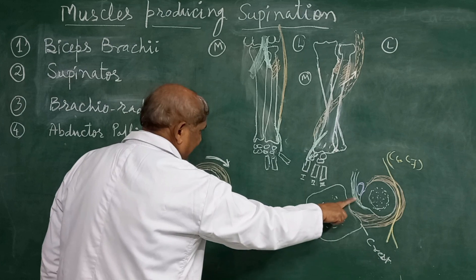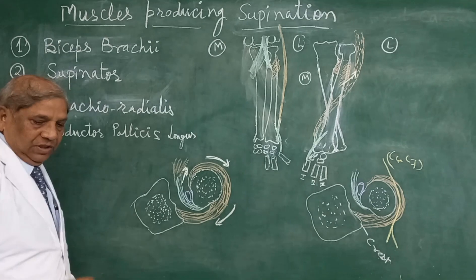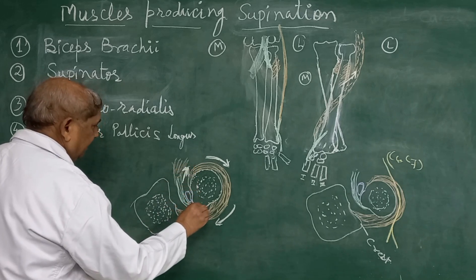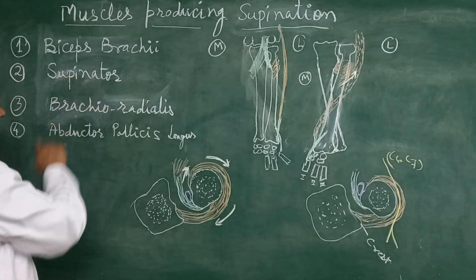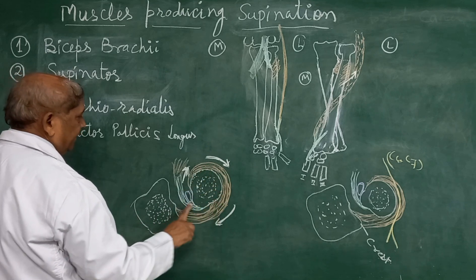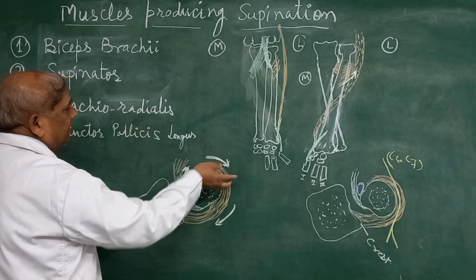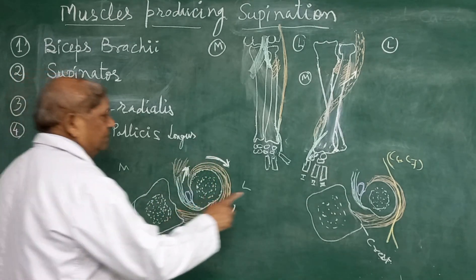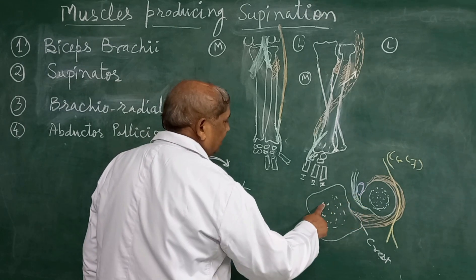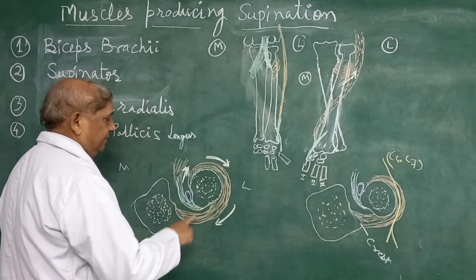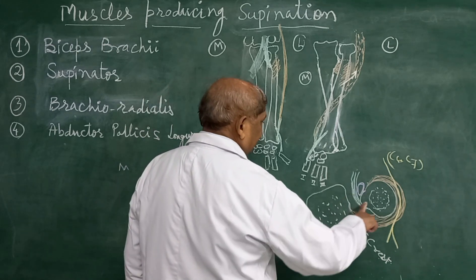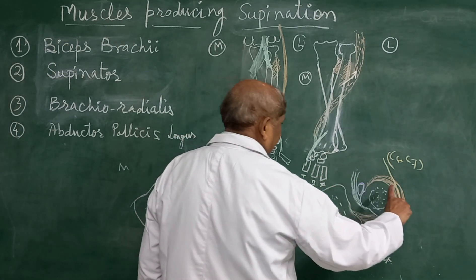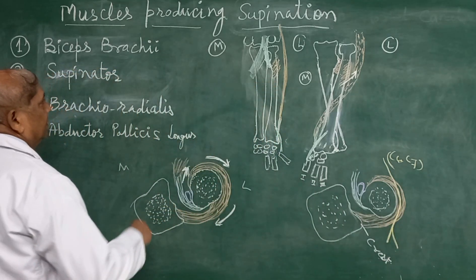When the biceps brachii contracts very strongly in the pronated position, the radial tuberosity is slightly facing backward. In the normal supine anatomical position, this muscle contracts and pulls the radius to rotate. The biceps brachii is attached to the posterior half of the radial tuberosity. When biceps brachii and supinator contract together, they rotate the upper end of the radius towards the lateral side, so that the radial tuberosity now faces exactly medially towards the ulna, completing the supination.